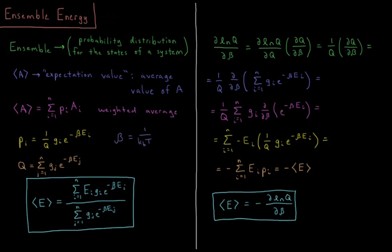This video will discuss the ensemble energy, or the average energy, of a system in statistical mechanics. An ensemble in statistical mechanics sometimes seems like a fairly nebulous or abstract concept, but basically what an ensemble is is the probability distribution for the states of a system. Atoms and molecules are very small particles that obey the laws of quantum mechanics, and in quantum mechanics, the result when we solve the Schrödinger equation is that we get a discrete set of quantized energy levels.